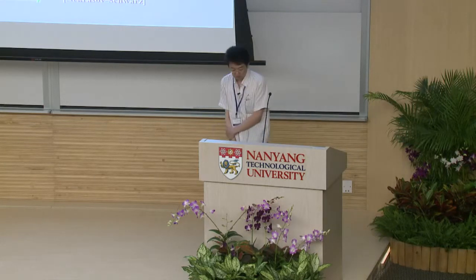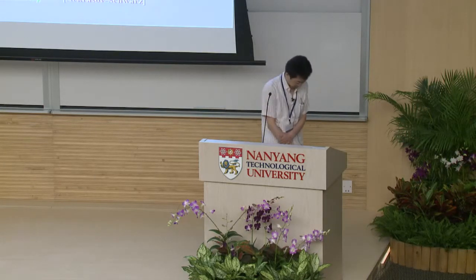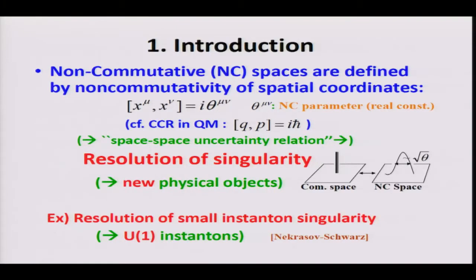Let me introduce the motivation. Non-commutative spaces are defined by the non-commutativity of the spatial coordinates. The constant on the right-hand side is called the non-commutative parameter, and in my talk, this is a real constant.